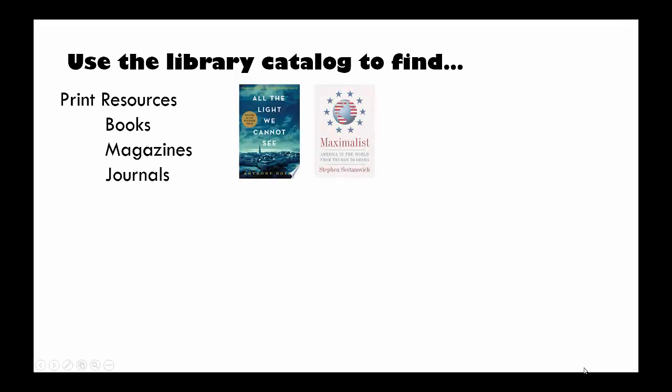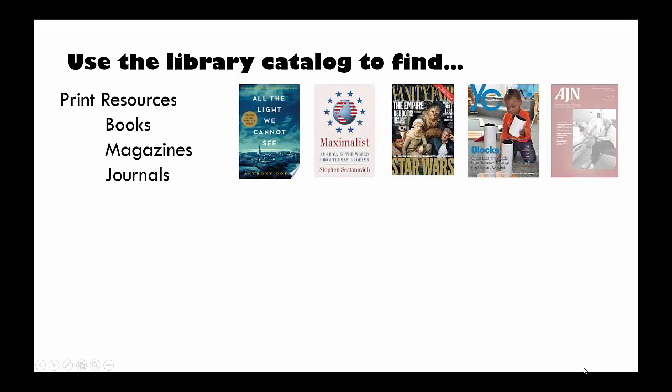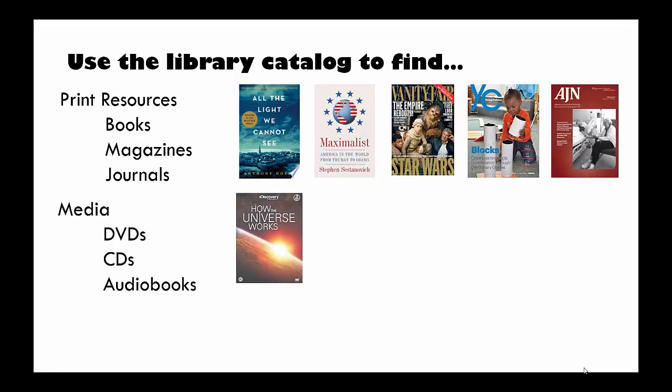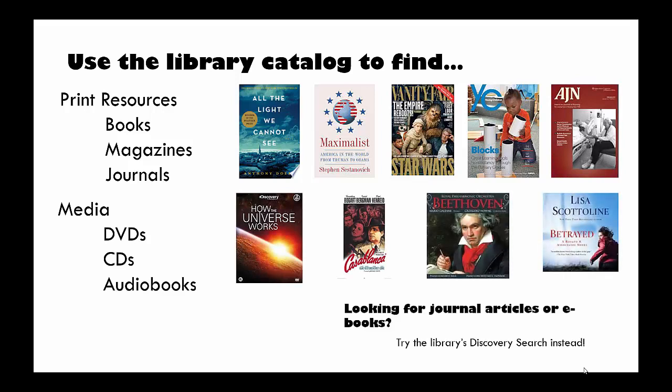Using the library catalog is the easiest way to find out if we have print resources like books, magazines, or journals, or media like DVDs, CDs, and audiobooks available in the library. If you're looking for journal articles or ebooks, you should try the library's discovery search instead.